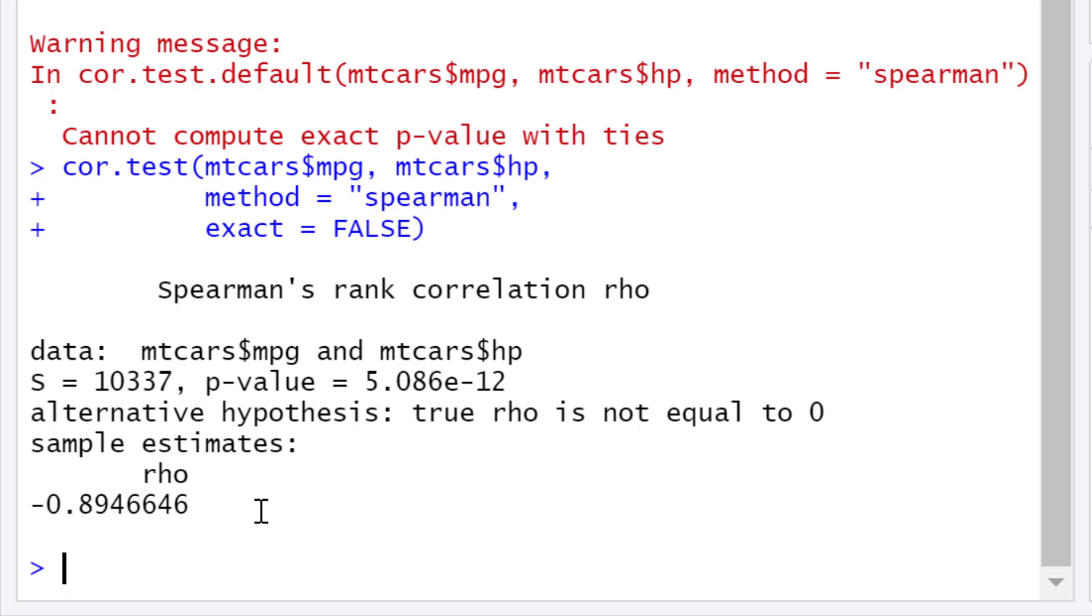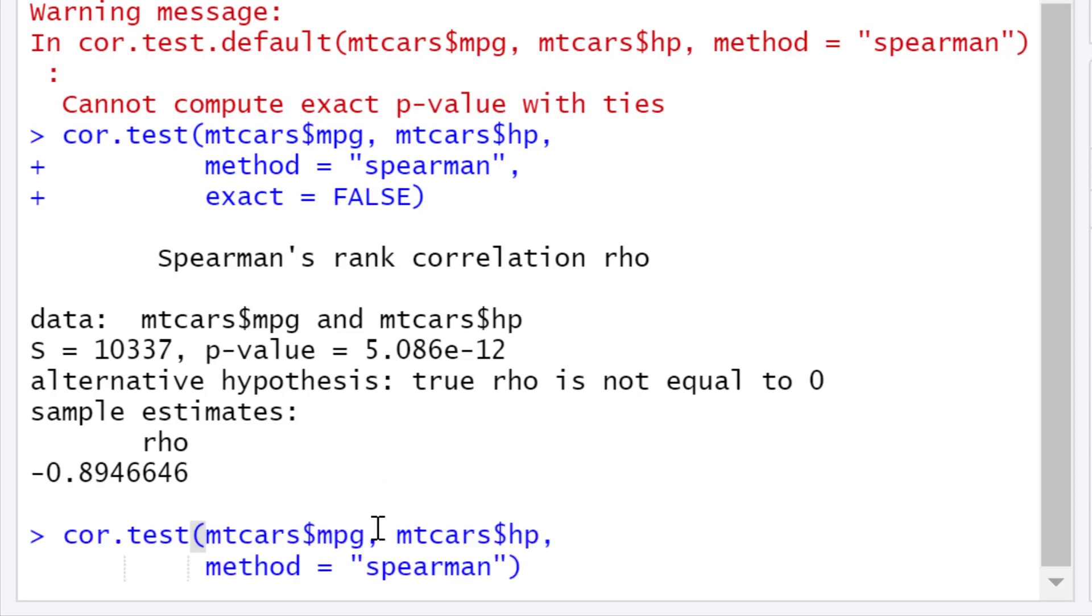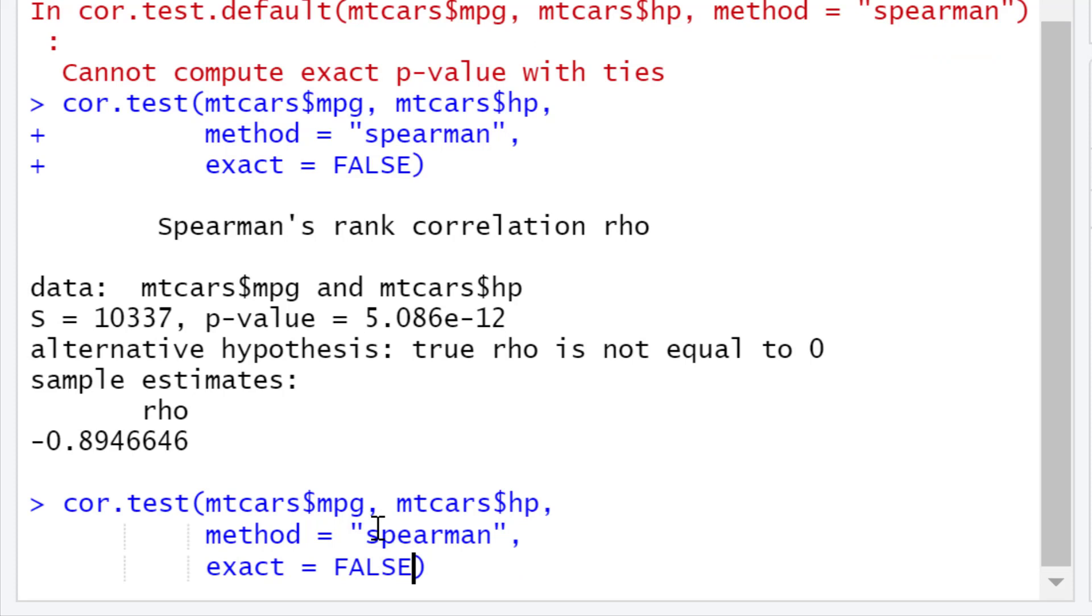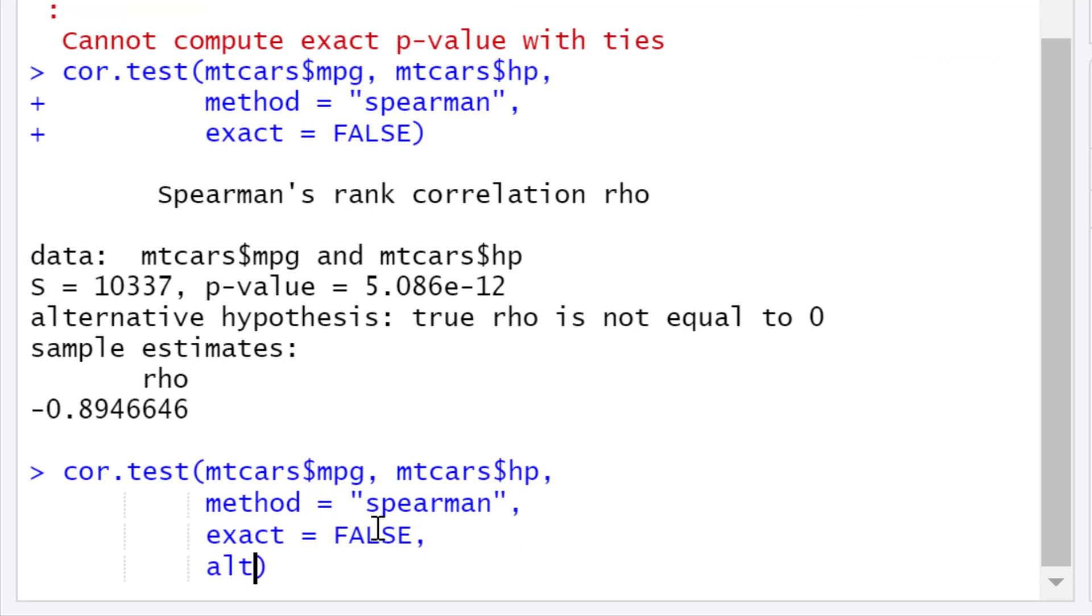Now if you wanted to run a Spearman correlation test that is one-sided as opposed to two-sided in this case, you need to add in the argument alternative. If I rerun the test, but in this case I'm going to add in the argument alternative equals speech marks. The options here can either be two-sided, which is the default value for the test, and this would run a two-sided analysis.